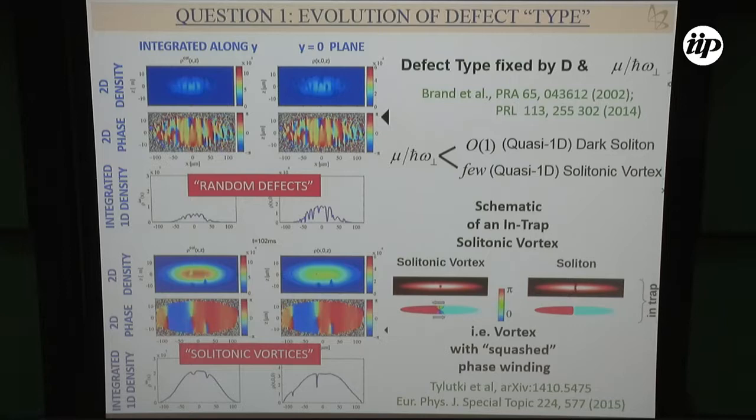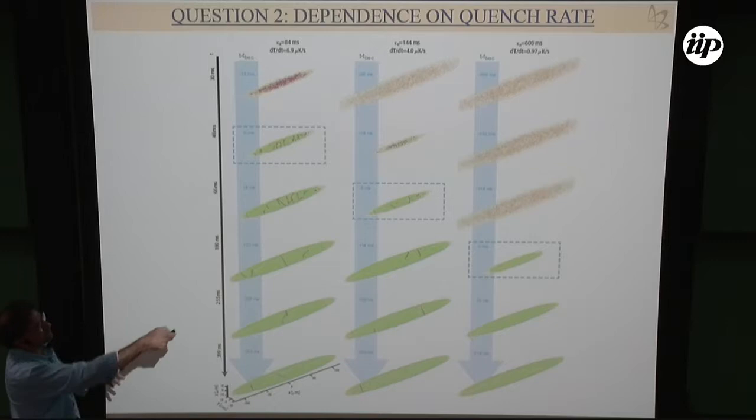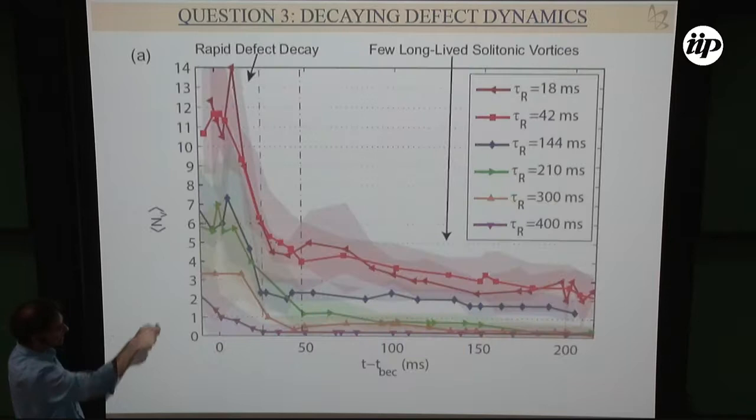Regarding the dependence on quench rate, here's an illustration for single runs at quench durations from 84 to 600 milliseconds. We see two things: first, a slower crossing of the phase transition for the slower quench; second, more defects at a later time in the fast quench compared to the slow quench. The exact number of defects will vary from run to run.